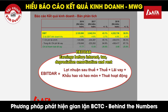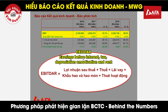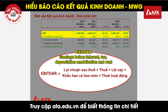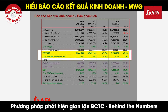Tỷ lệ EBITDAR đóng vai trò cực kỳ quan trọng đối với hoạt động của Thế Giới Di Động. Nó cho chúng ta hình dung được khả năng tạo ra dòng tiền mà không chịu ảnh hưởng của cấu trúc vốn, tỷ lệ vốn vay trên tổng tài sản, cấu trúc tài sản cũng như các chính sách thuê liên quan. Đối với công ty bán lẻ như Thế Giới Di Động, chúng ta cần tính thêm các khoản thuê hoạt động vào chỉ tiêu này, bởi vì bản chất các khoản thuê hoạt động giống như các khoản hao mòn tài sản mà Thế Giới Di Động sẽ phải chi trả trong tương lai.